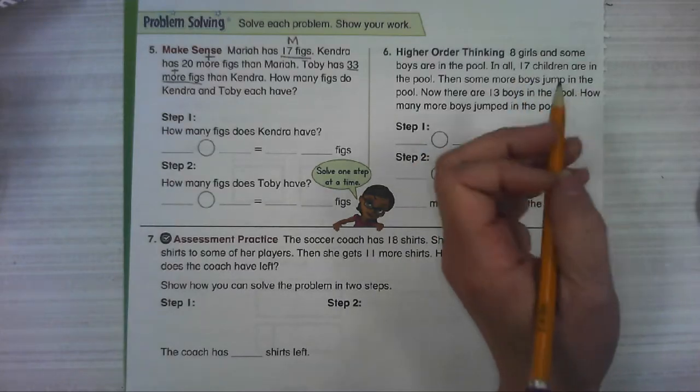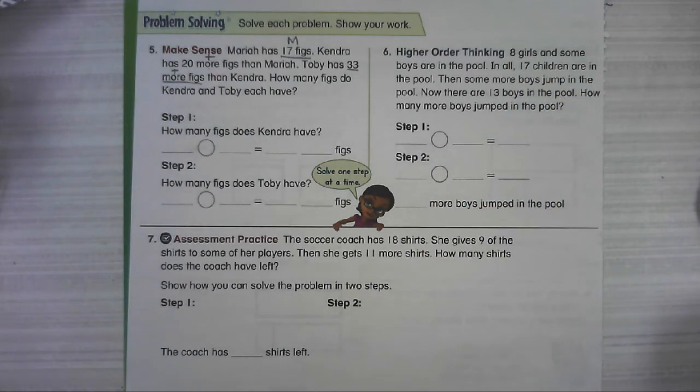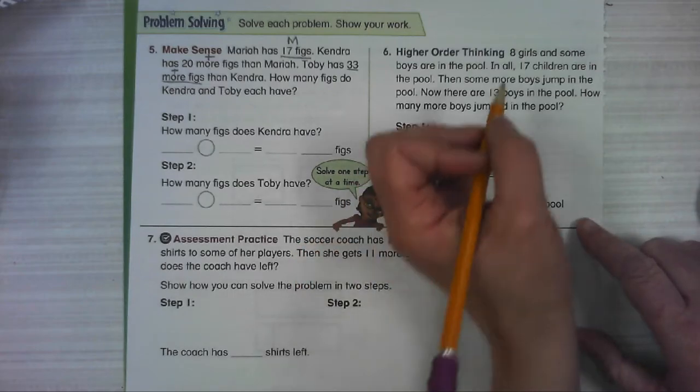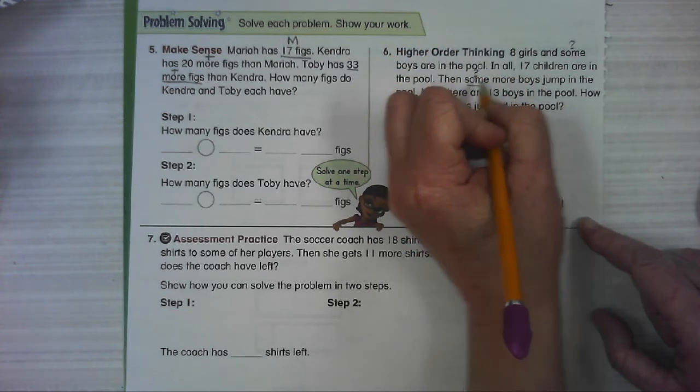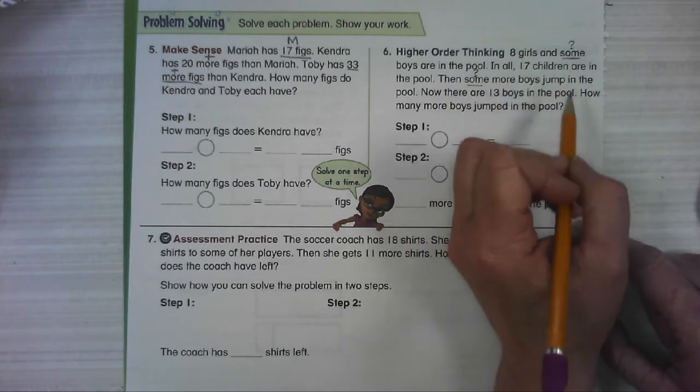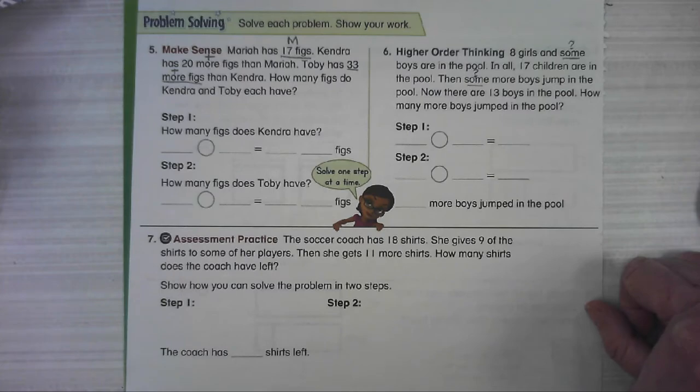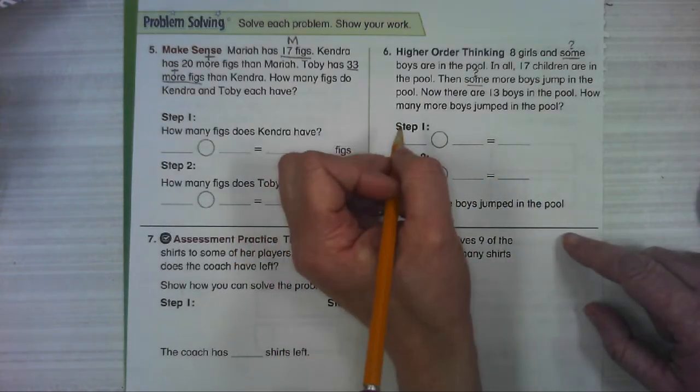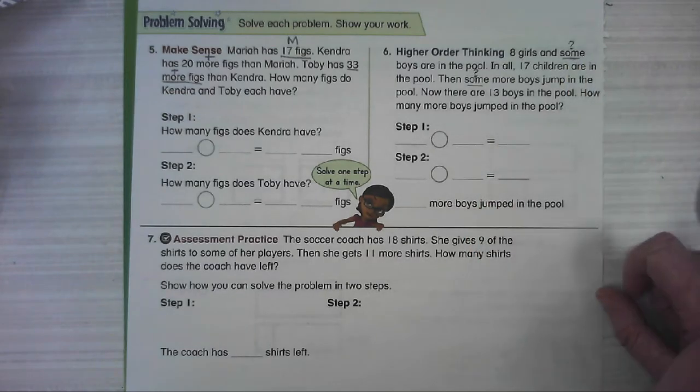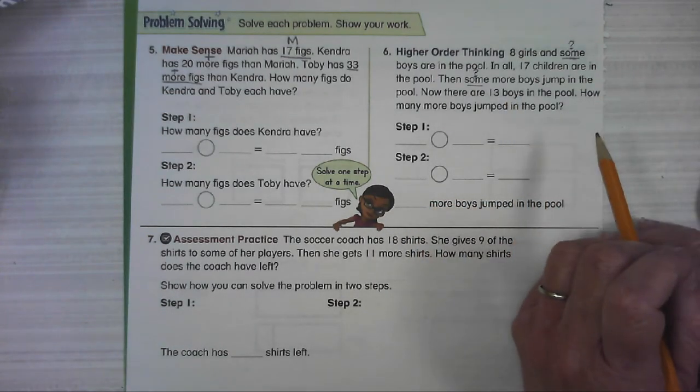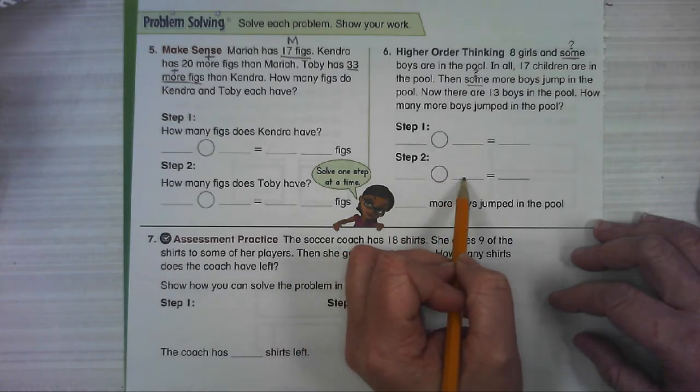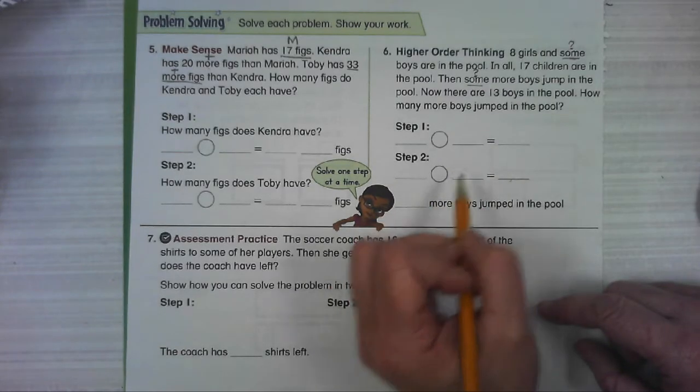Number six. Eight girls and some boys are in a pool. In all, 17 children are in the pool. Then, some more boys jump in the pool. Now there are 13 boys in the pool. How many more boys jumped in the pool? Remember that some is a number. It's a number that we just don't know yet. So we're starting with eight girls and some boys are in the pool. But we know that there are 17 children. So step one, you're going to have to figure out how many boys were in the pool to start out with. Then, some more boys jump in the pool to make 13. So you're going to take however many boys were at the beginning and then put some more boys in the pool, and it's going to equal 13.